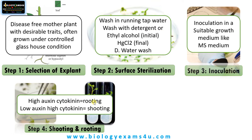We will be subculturing these if there is nutrient depletion. Then, after rooting, we add low auxin and high cytokinin, which favors shooting. So we end up with a plantlet inside the culture tube with shoots, roots, and many leaves.